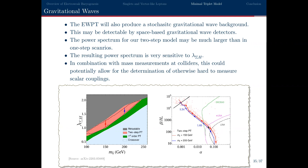This is particularly interesting because while collider searches can constrain the triplet mass, measuring scalar couplings is very difficult. With gravitational waves, even a relatively small change in the scalar coupling leads to a very rapidly changing gravitational wave signal size. So if you measured a new scalar mass at a collider and also found a non-zero gravitational wave background, you could very accurately measure regions of the scalar potential parameter space. The interplay between collider searches and gravitational wave searches for novel phase transitions is very exciting.